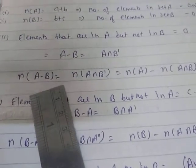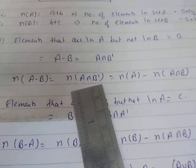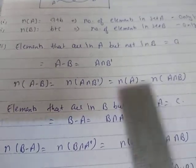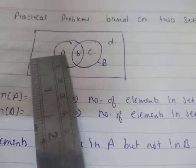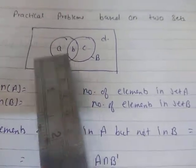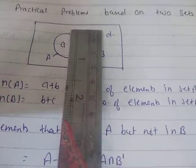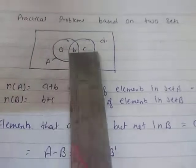n(A - B) is equal to A minus A∩B. To find only A, take the whole circle n(A) and subtract the intersection part n(A∩B). This way you can find the value of n(A - B).